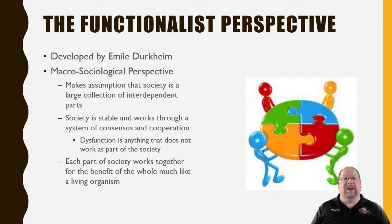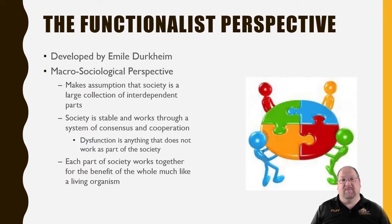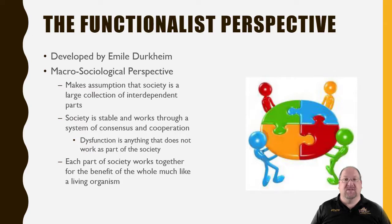When consensus and cooperation don't happen, Durkheim considers this a dysfunction of society — something not working as part of society's plan. For example, somebody breaking the law is a dysfunction. The purpose of laws is to keep people safe and orderly; when somebody isn't willing to follow the status quo, that's a dysfunction that needs to be corrected. Schools, police, technology, and leaders are all there because they help society function better.